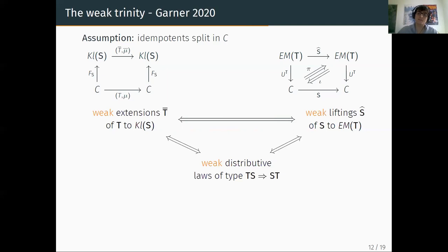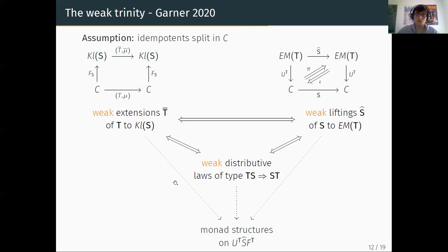A weak lifting is weak in a different sense: it is actually a full monad with functor, unit, and multiplication. But the commutativity diagram does not hold strictly. It almost commutes in the sense that there are natural transformations pi and iota such that iota followed by pi gives the identity, but pi followed by iota is not the identity — so we cannot simplify this to say the diagram commutes. This is why it is a weak lifting. Additionally, pi and iota must satisfy four further diagrams. Again, we have this correspondence, which leads to a monad structure on a composite functor — though not exactly on ST itself, since the natural transformations pi and iota are not inverses of each other.